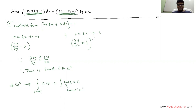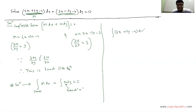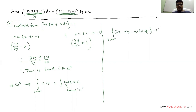Writing the solution: the first integral is ∫(4x + 3y − 4) dx, with y treated as a constant. For the second integral, we take only the terms of N that are free of x — so we cannot take 3x, but we can take −7y and −3. So the second integral is ∫(−7y − 3) dy.